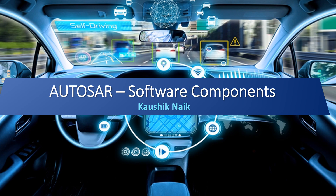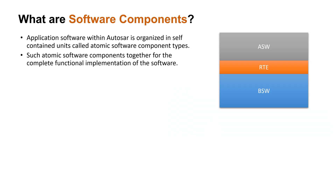Hello, my name is Kaushik Naik and today I am here to explain what an application software component really consists of. The ASW layer within AUTOSAR is organized as a self-contained unit called atomic software component type. An atomic software component type represents a functional implementation of the application. Such a small collection of software components together form the complete functional implementation of the system.